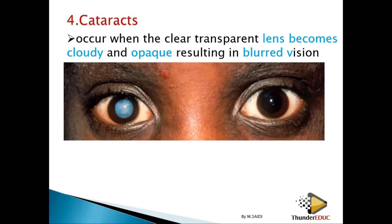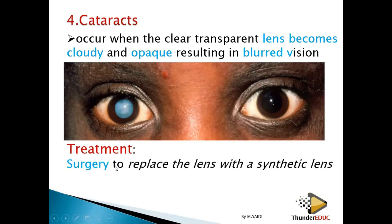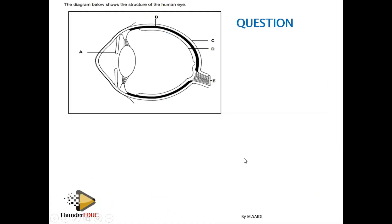You treat cataracts by performing surgery to replace the lens with a synthetic lens. You remove the lens that was there and put in a man-made, manufactured lens.